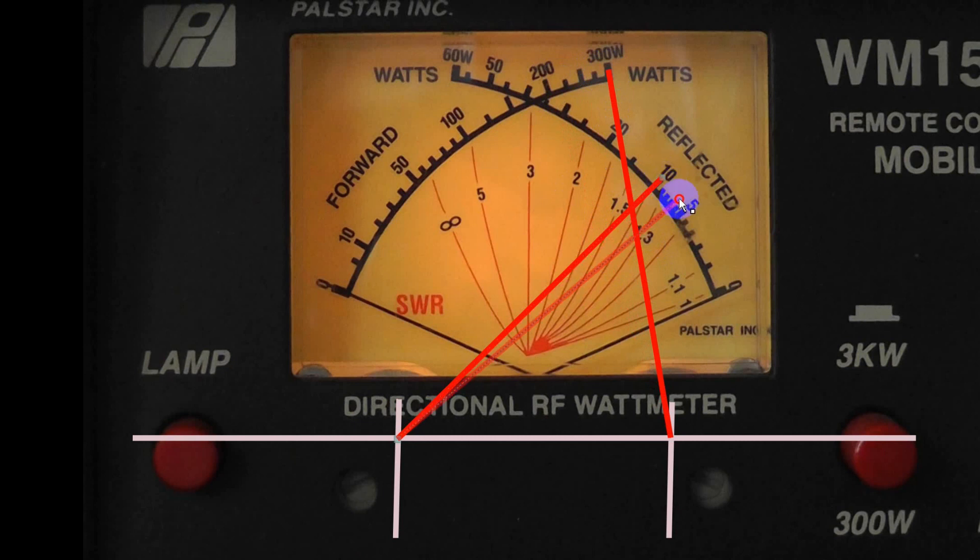Now let's take a different amount of reflected power here. We'll move this down to 5 watts. It's only 1.2 to 1 at 300 watts out, but let's go for a more realistic 100 watts. And we are at 1.5. That's still a very good SWR right there.